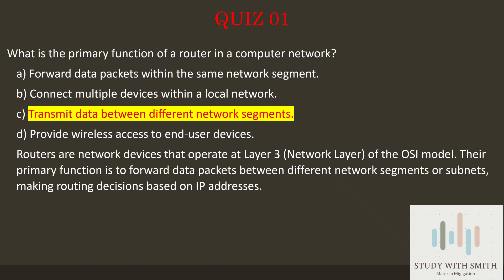Routers are network devices that operate at layer 3, the network layer, of the OSI model. Their primary function is to forward data packets between different network segments or subnets, making routing decisions based on IP addresses.